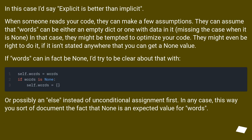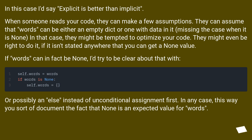In this case I'd say explicit is better than implicit. When someone reads your code, they can make a few assumptions. They can assume that words can be either an empty dict or one with data in it, missing the case when it is None. In that case, they might be tempted to optimize your code. They might even be right to do it, if it isn't stated anywhere that you can get a None value.